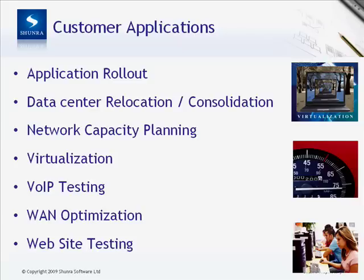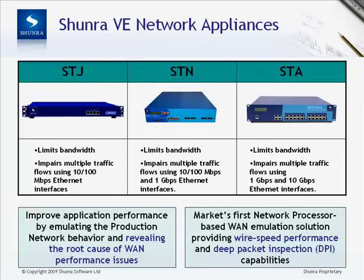Here are a few key examples of how organizations are utilizing our solution to help them better accomplish their IT projects and initiatives: application rollouts, data center relocation and consolidation, network capacity planning, virtualization, voice over IP testing, WAN optimization, and website testing. Clients can choose the network appliance that meets their needs. The STJ, STN, and STA all limit bandwidth and impair multiple traffic flows at various levels.